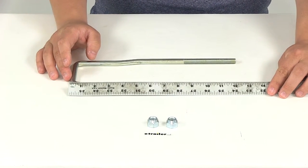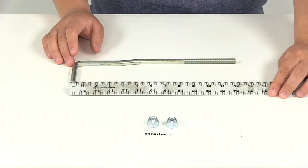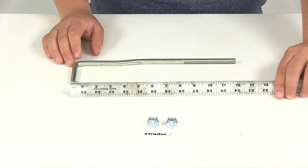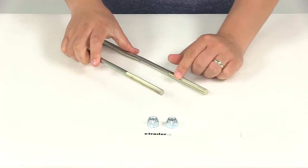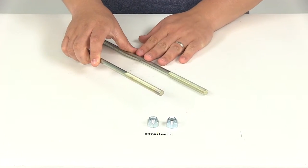Measuring from the top of the bar to the end of the threaded portion gives us about 12 1/4 inches. The threaded portion contains 20 threads per inch and has a diameter of 7/16ths of an inch.